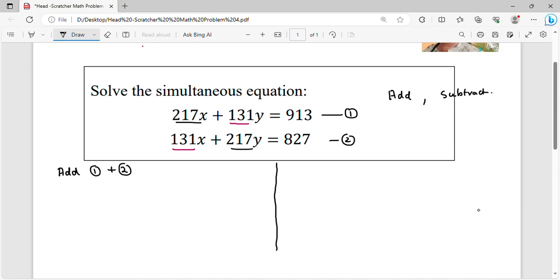217 plus 131 is going to be 348x, plus again 348y, is equal to 1740. If I look at this, I have a common factor 348. So if I divide by 348, I land up with a very simple simultaneous equation: x plus y is equal to 5, because 5 times 348 is 1740. And this is equation 3. Do you see that complicated equation has just turned out to be this?